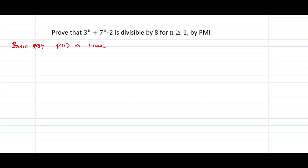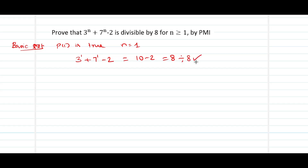When we apply n equal to 1 in the given statement, we have 3 power 1 plus 7 power 1 minus 2, which gives us 10 minus 2. That is 8, and 8 is divisible by 8 — yes, the statement is true. Therefore, we have proved that p of 1 is true.